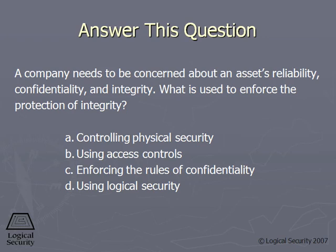Control A is controlling physical security. Well, there could be digital things that affect integrity, so physical security isn't enough. C talks about enforcing the rules of confidentiality, which is not integrity. D is talking about logical security, which is technical — the exam and the industry use logical and technical interchangeably. Remember, we have administrative, physical, and technical controls. That's why B is the right answer — using access controls — because it actually includes A, C, and D.